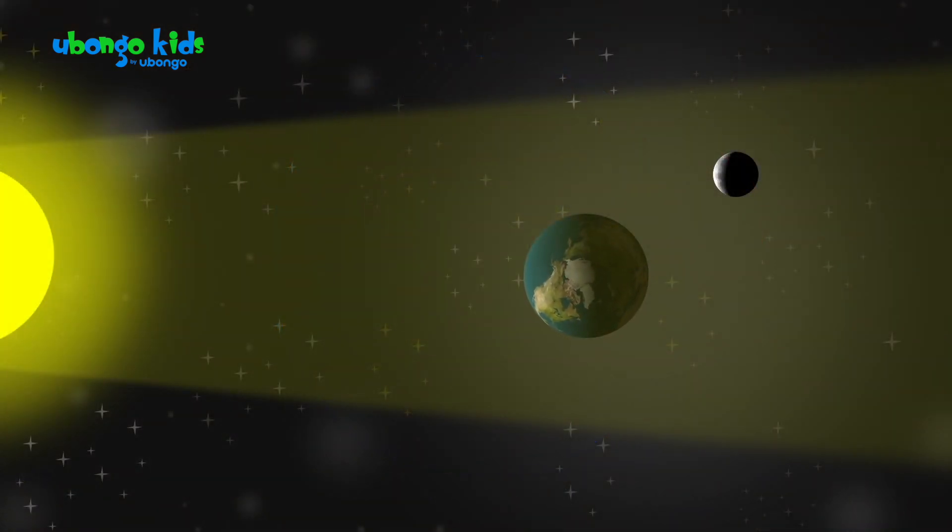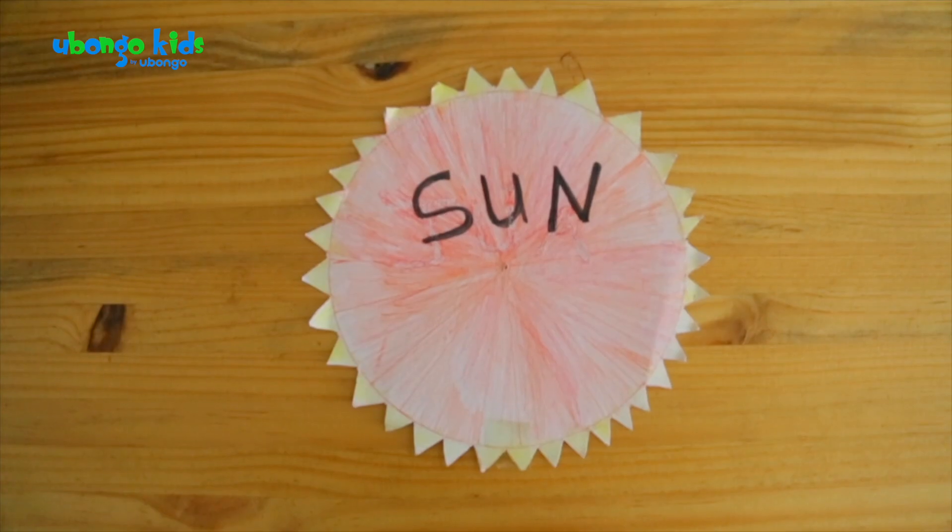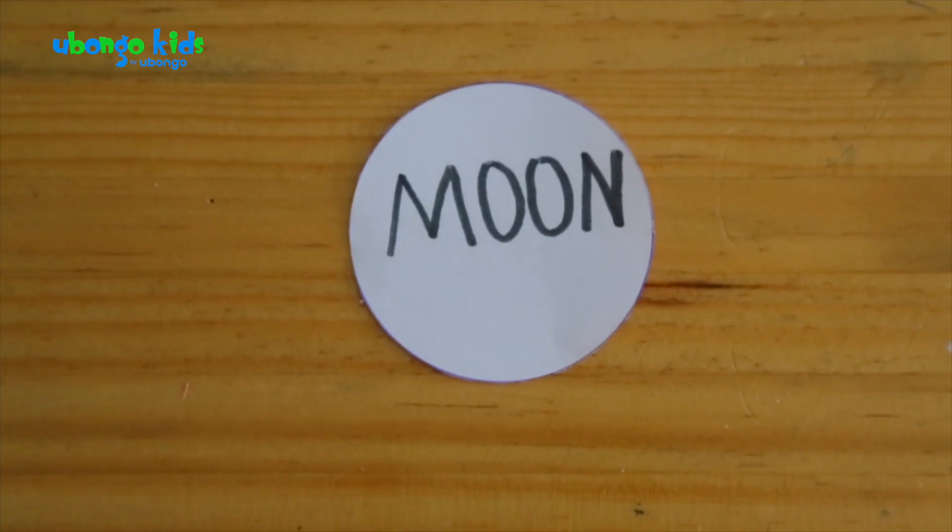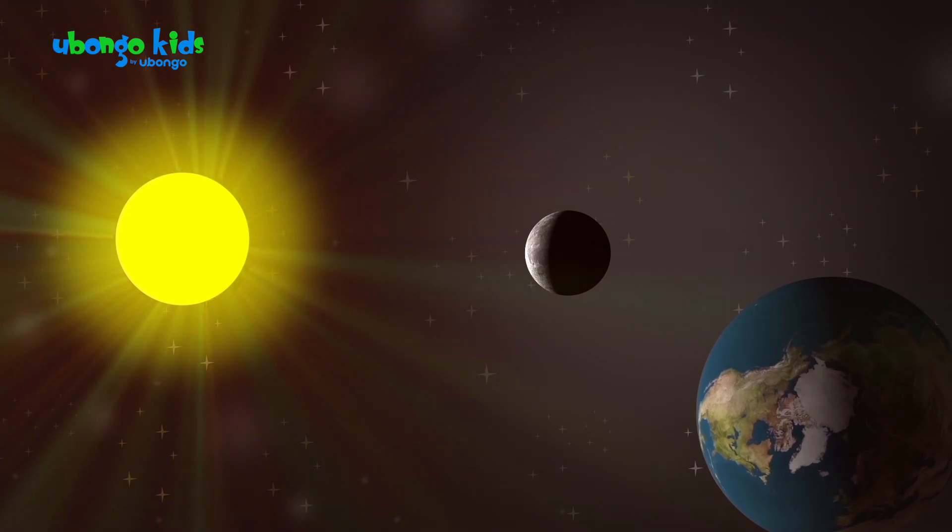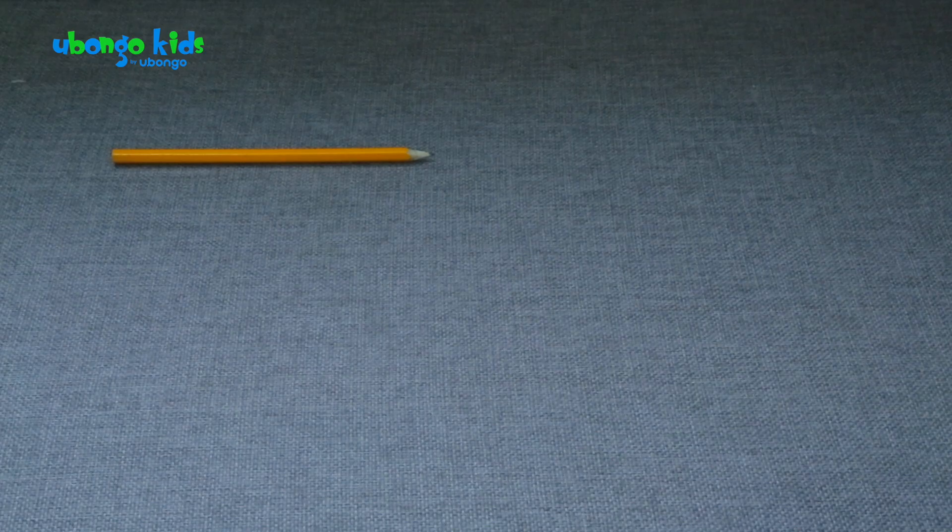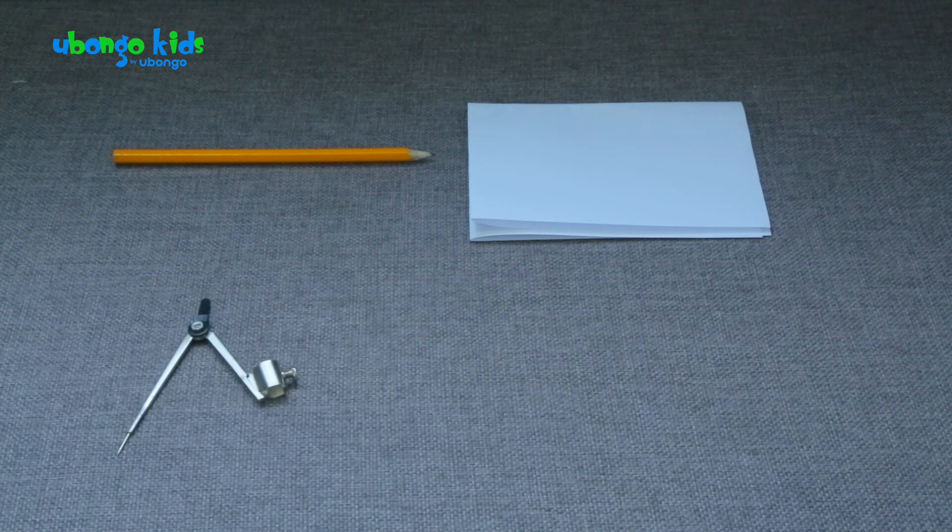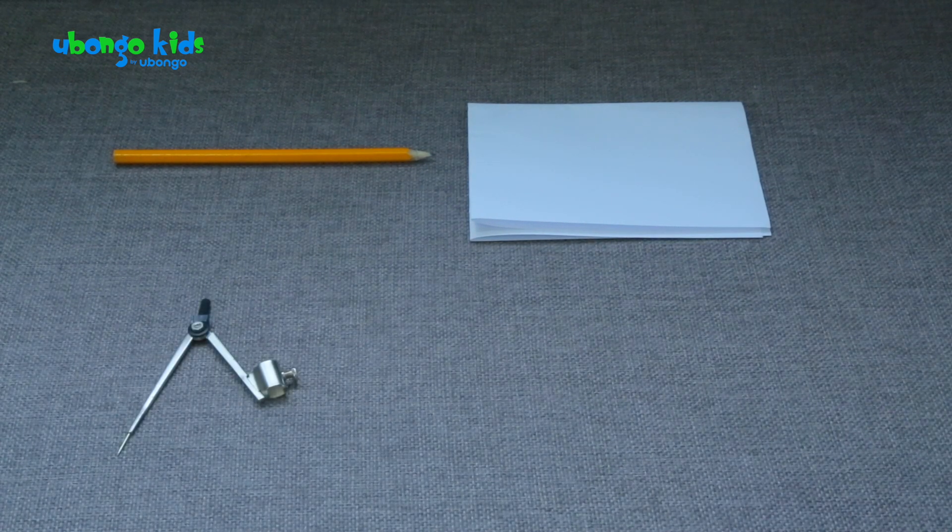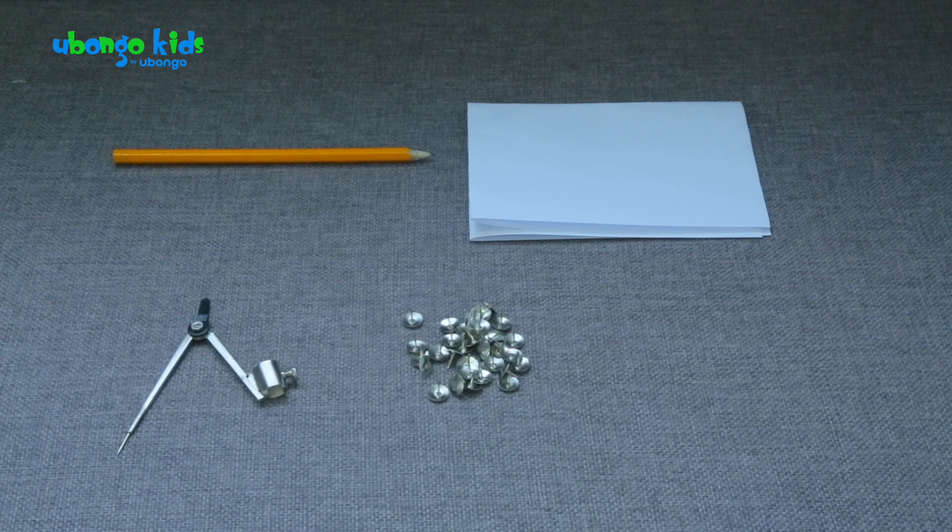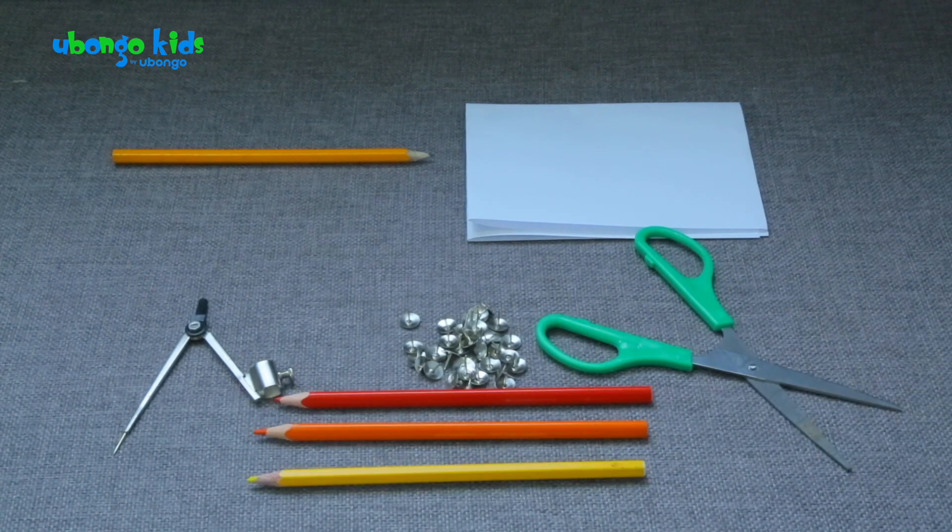Therefore, we are going to deal with three things: the sun, the earth, the moon. For today's demonstration, you will need a pencil, some card, a compass or something to help you draw a circle, some small pins, scissors, and colors for coloring in.